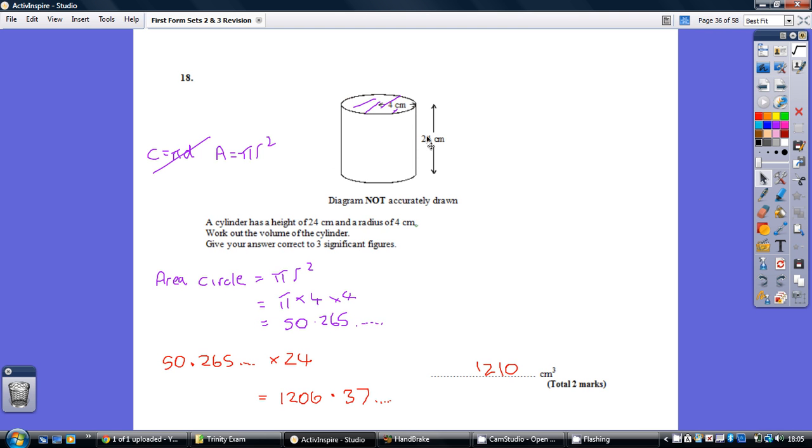So how do we go and work out a volume of a prism? Step 1, we work out the area of the end bit, and step 2, we times it by how fat it is.